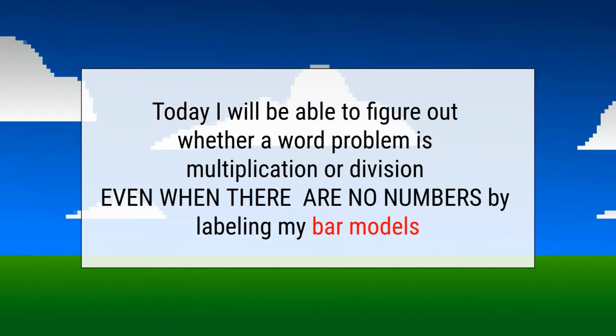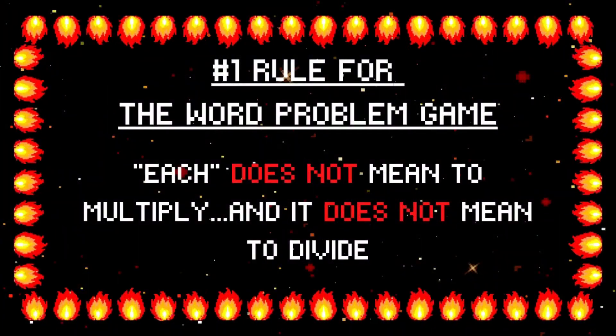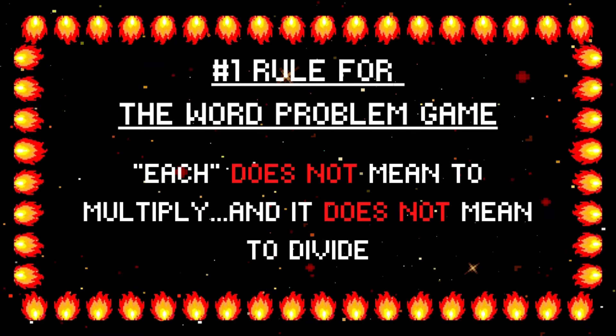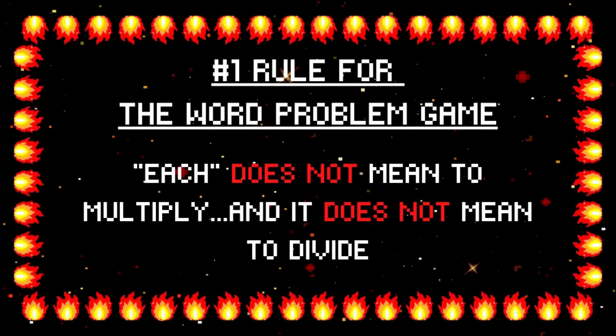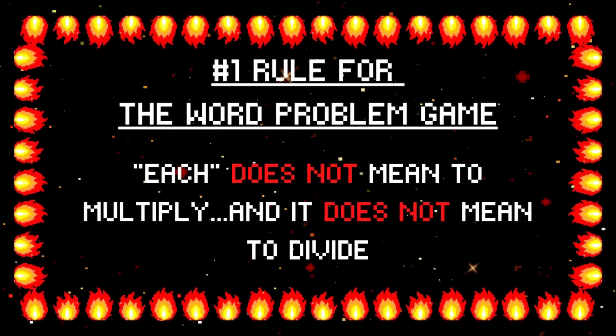If you don't believe me, let's take a look at this lesson. Here we have the same number one rule for this word problem game as we did for our last lesson. If you're just diving into this one and you want to see an example with numbers, check out our last lesson. If you already played that game and you're now on this level, you know that each does not mean to multiply and it does not mean to divide. If you are a teacher or student and you've been saying that, stop thinking that. That's just a shortcut. It's not always going to work and you will get tricked.